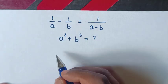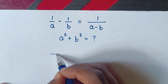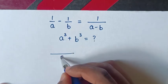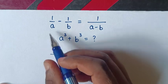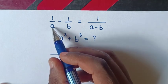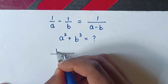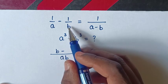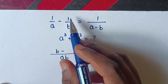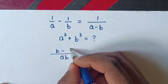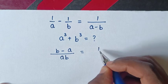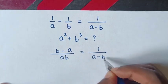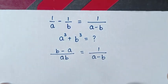First, from here, the common denominator is ab. So ab divided by a is b, b times 1 is b, minus ab divided by b is a, a times 1 is a, is equal to 1 over a minus b.